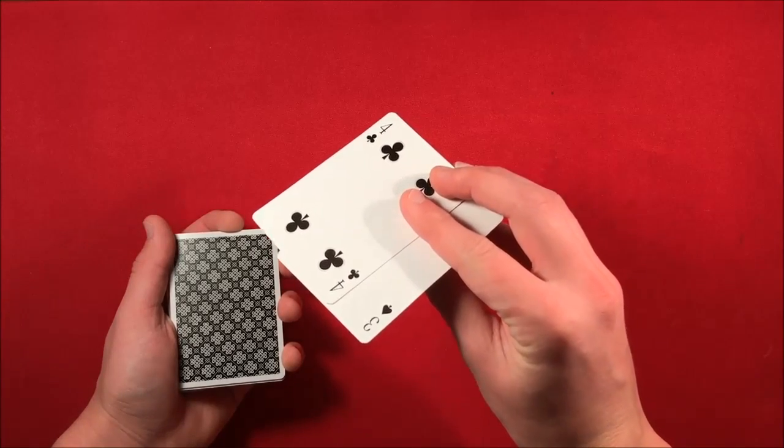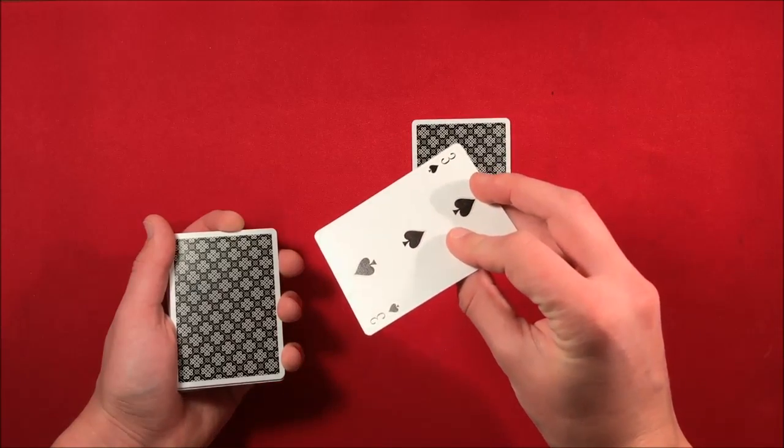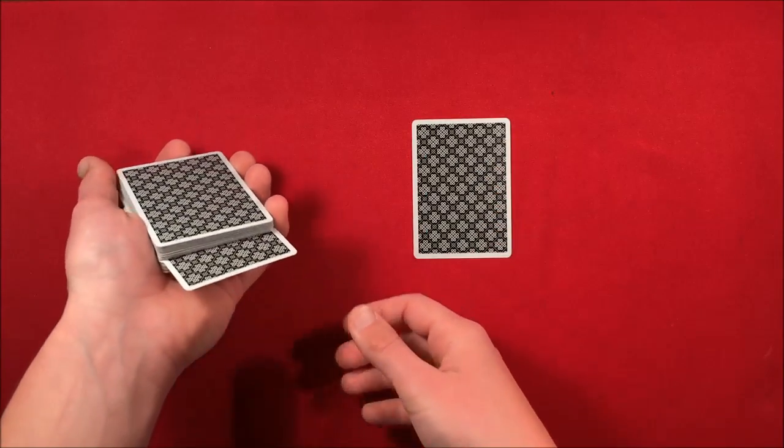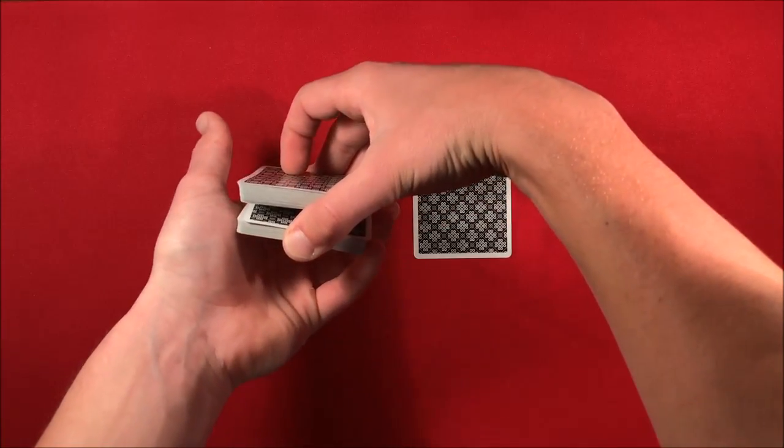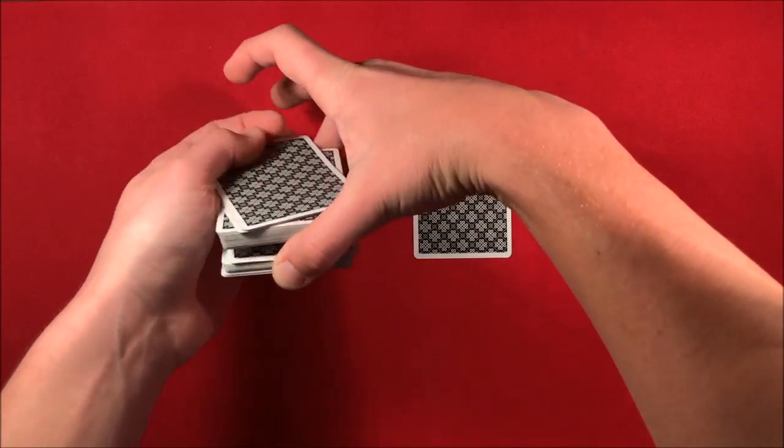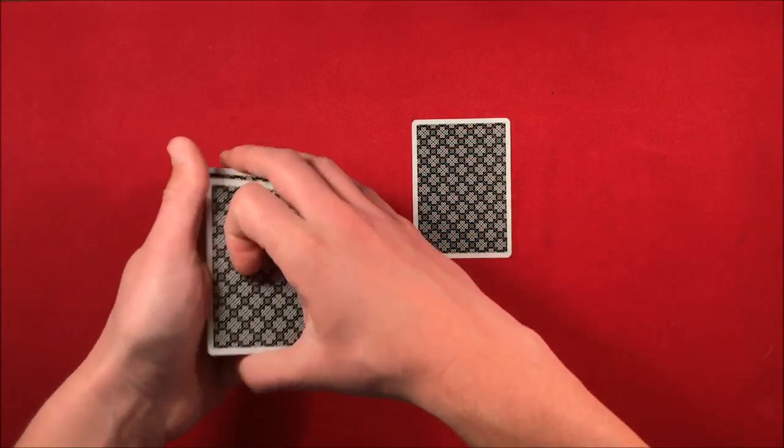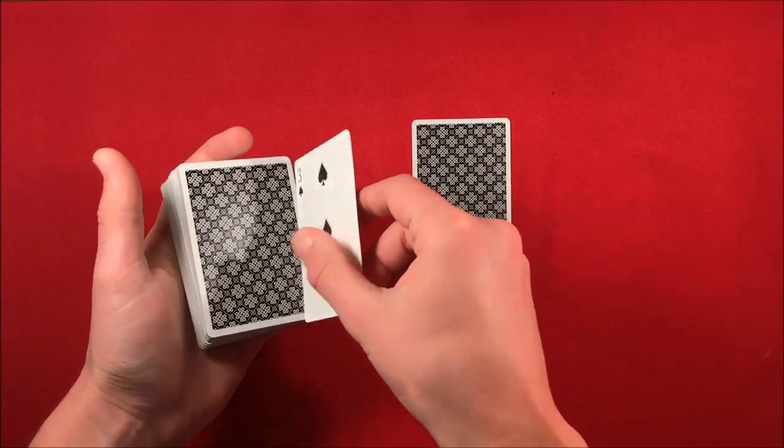These are completely random, make sure the spectator remembers them. One at a time, you can take the three and you can just double undercut it to the top by sticking it in the middle, pushing down, getting that break, and then cutting it back to the top. This card goes back to the top.